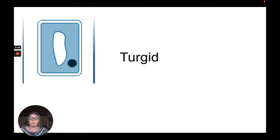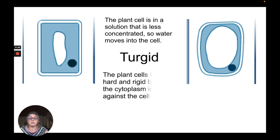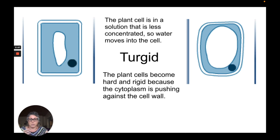The third thing that can happen is when the cells become turgid. Turgid is when the plant cell is in a solution that is less concentrated than it. The potatoes placed in the zero sugar beaker — pure water — became turgid; they became very hard and full of water. The concentration in the beaker was zero compared to roughly 3.5 grams of sugar in the potato, so the water potential gradient moves water from the beaker into the potato. A turgid cell becomes hard and rigid because the cytoplasm and the vacuole, which are full of water, push against the cell wall.